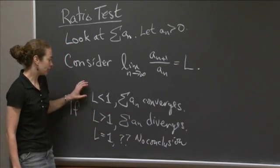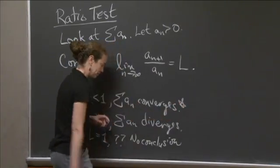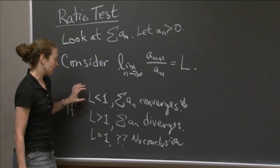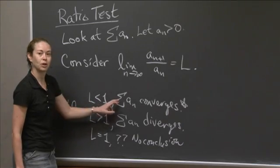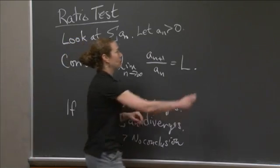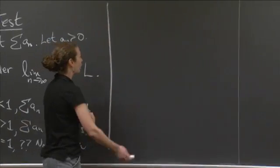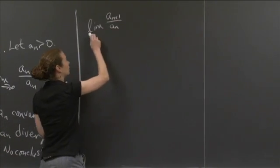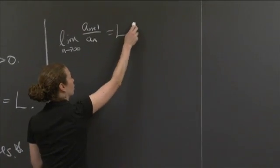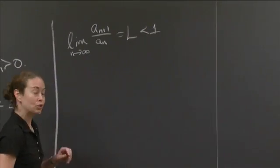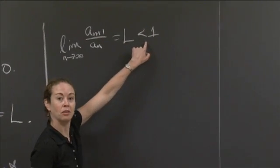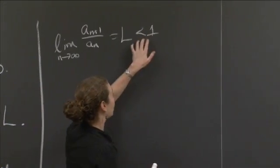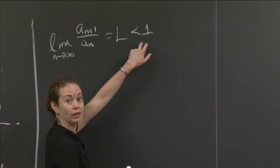Let me give you a little understanding of why, when L is less than 1, the series converges — the same kind of logic can be used for the divergence case. So if L is less than 1, that means the limit of a sub n plus 1 over a sub n equals L, which is less than 1. So we can pick a number R strictly between L and 1.